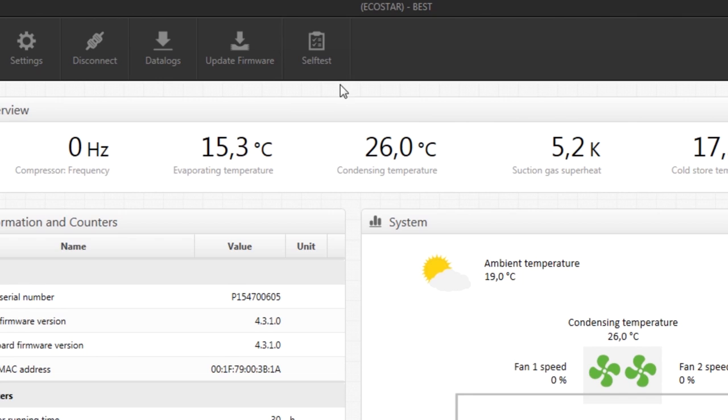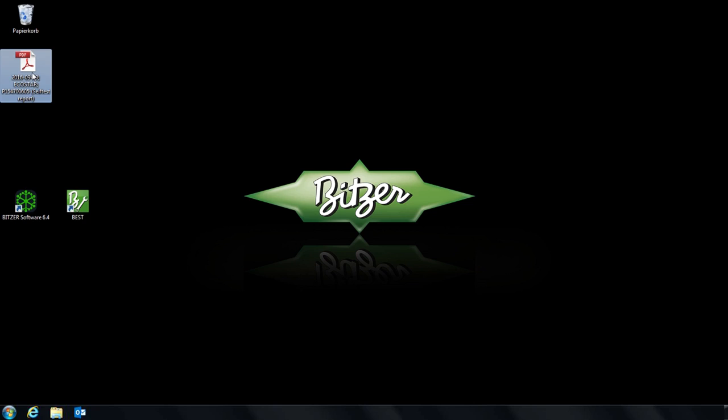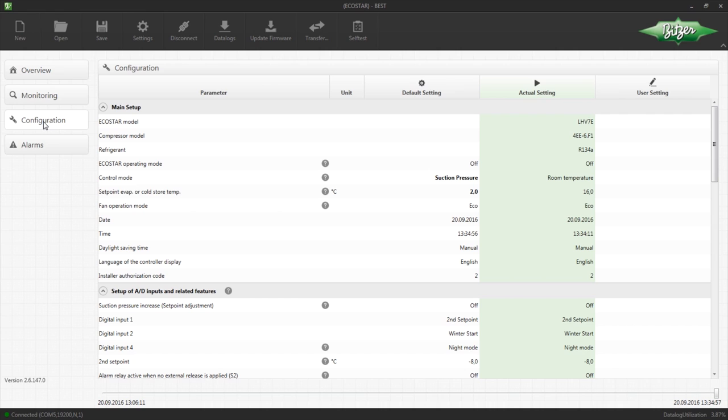The self-test function allows you to check all the device's components to ensure they're functioning correctly. Following the test, a status report can be generated and saved. Operating parameters can be changed under the menu item Configuration. All other device functions that make the echo star so outstanding can be set and adjusted here with ease.